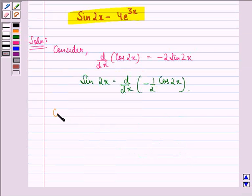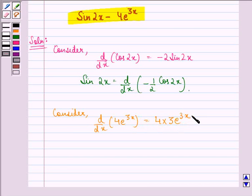Now we consider d by dx of 4 into e raised to power 3x is 4 into 3 into e raised to power 3x, because 4 being a constant remains as it is, derivative with respect to x. So if e raised to power 3x is e raised to power 3x multiplied by the derivative of 3x, that is 3.